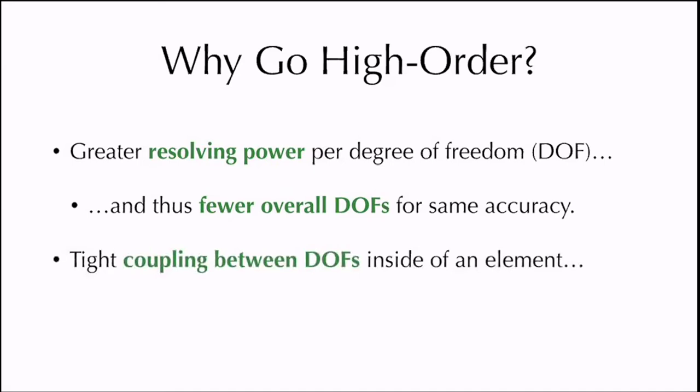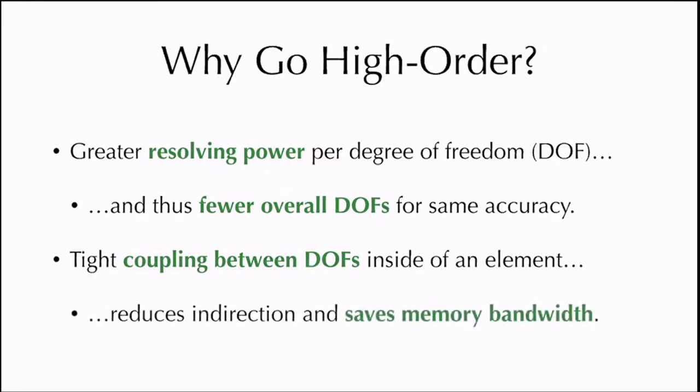The other advantage of going high order is that these degrees of freedom are now clustered inside of these larger elements. This is one of the things which makes mesh generation more challenging, but the benefit of this tight coupling between the degrees of freedom in elements is that compared to a second order finite volume scheme, which just uses relatively simple cells, we have less indirection, and furthermore the scheme itself requires less memory bandwidth. I'll talk a little bit later in this presentation about why this is so important in the context of modern hardware.